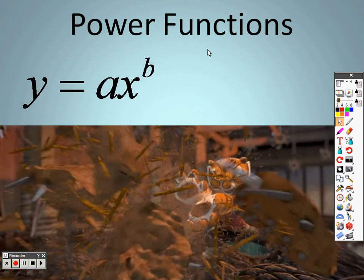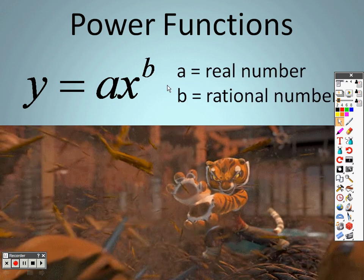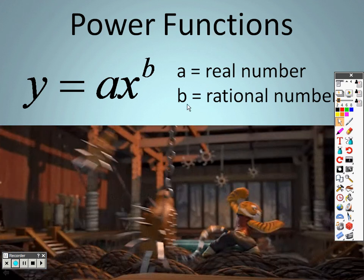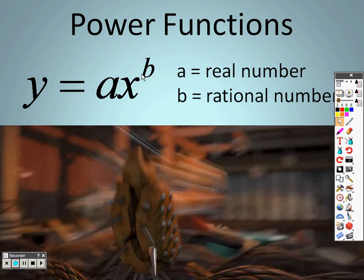The power function is ax to the b. And what that basically is saying is that a is a real number right here. And the power function means b is a rational number. Rational meaning some type of fraction in some way.